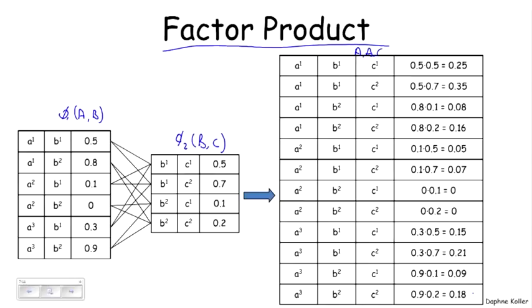If we want to figure out, for example, the value of the row A1, B1, C1, it's going to come by taking the A1, B1 row from here, the B1, C1 row from here, and multiplying them together. So we're going to get 0.25. So this is effectively taking the functions or the tables and just multiplying them together.